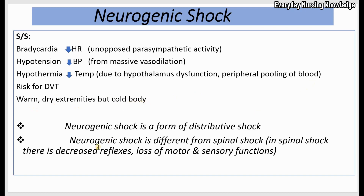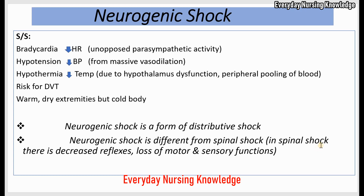Neurogenic shock is a form of distributive shock — shock caused by vasodilation. Other types of distributive shock include septic shock and anaphylactic shock. Neurogenic shock is different from spinal shock: spinal shock results from spinal cord injury leading to decreased reflexes and loss of motor and sensory function, whereas neurogenic shock leads to hemodynamic changes.